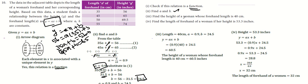To find the height of a woman whose forehand length is 40 centimeters, y equals 0.9 times 40 plus 24.5. 0.9 times 40 is 36, plus 24.5 equals 60.5. The height is 60.5 inches.